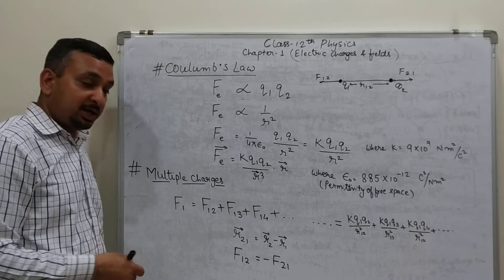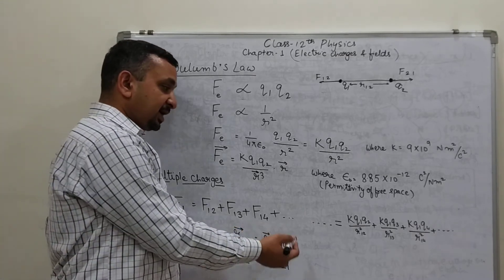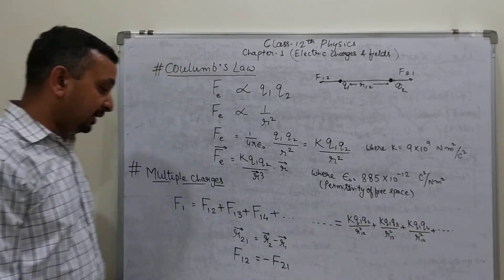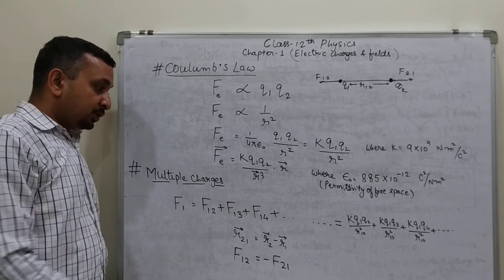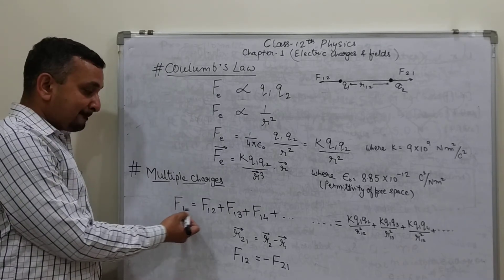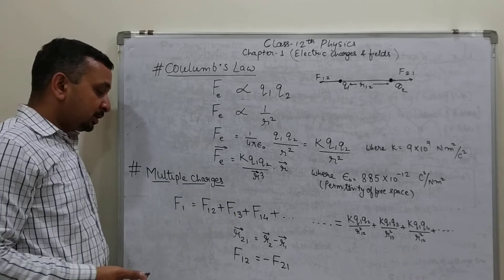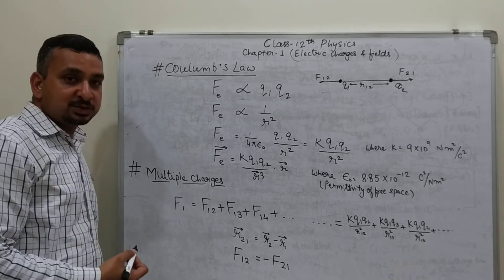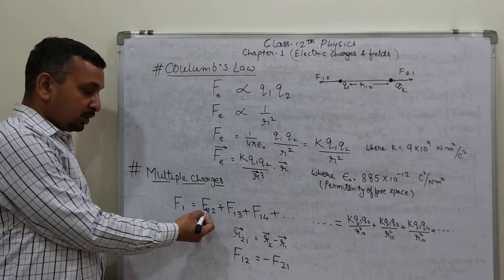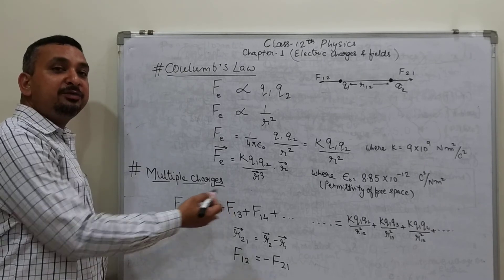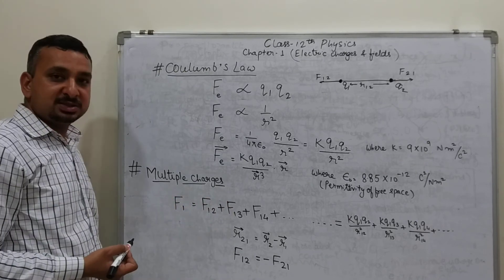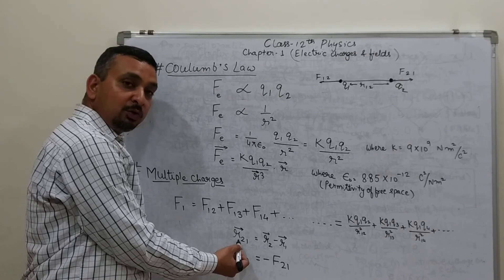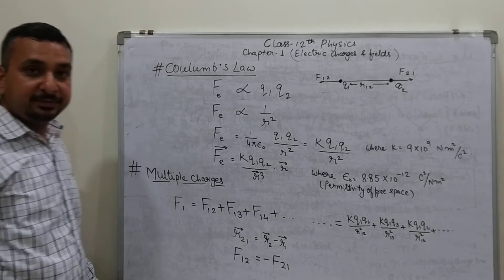The force on the first charge equals the force on it due to the second charge, plus the force due to the third charge, plus the force due to the fourth charge, and so on. In total, the force on the first charge is the sum of all the forces exerted by all the individual charges on it. This is the principle of superposition.